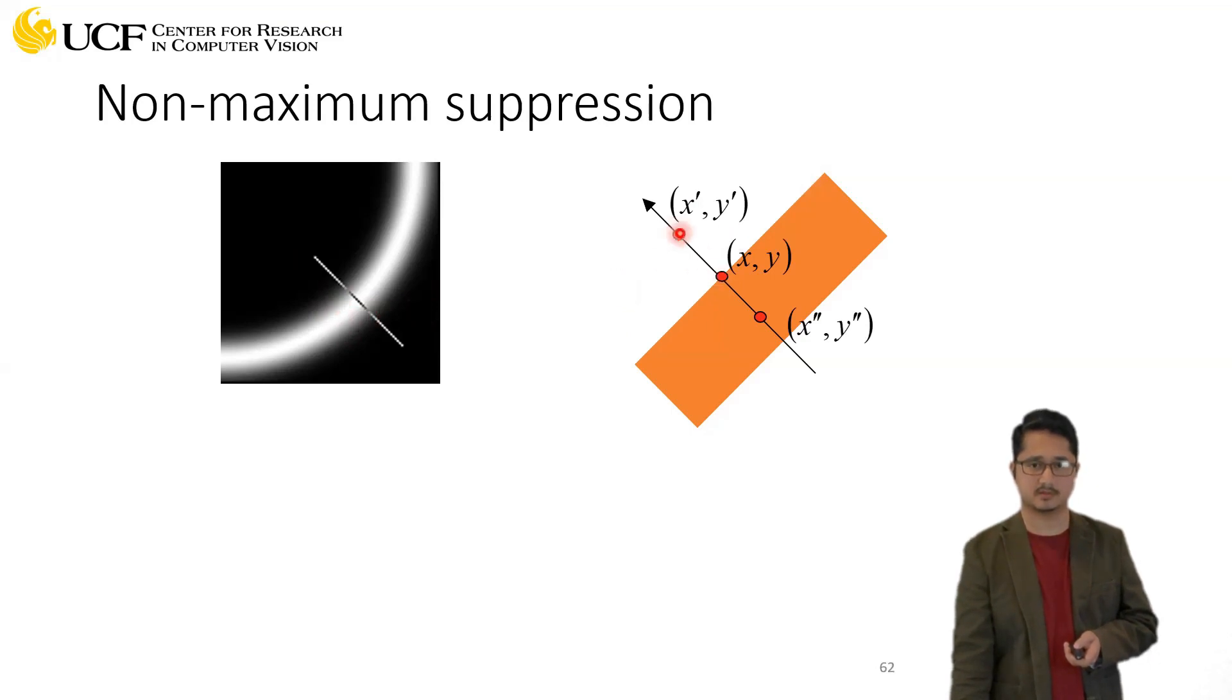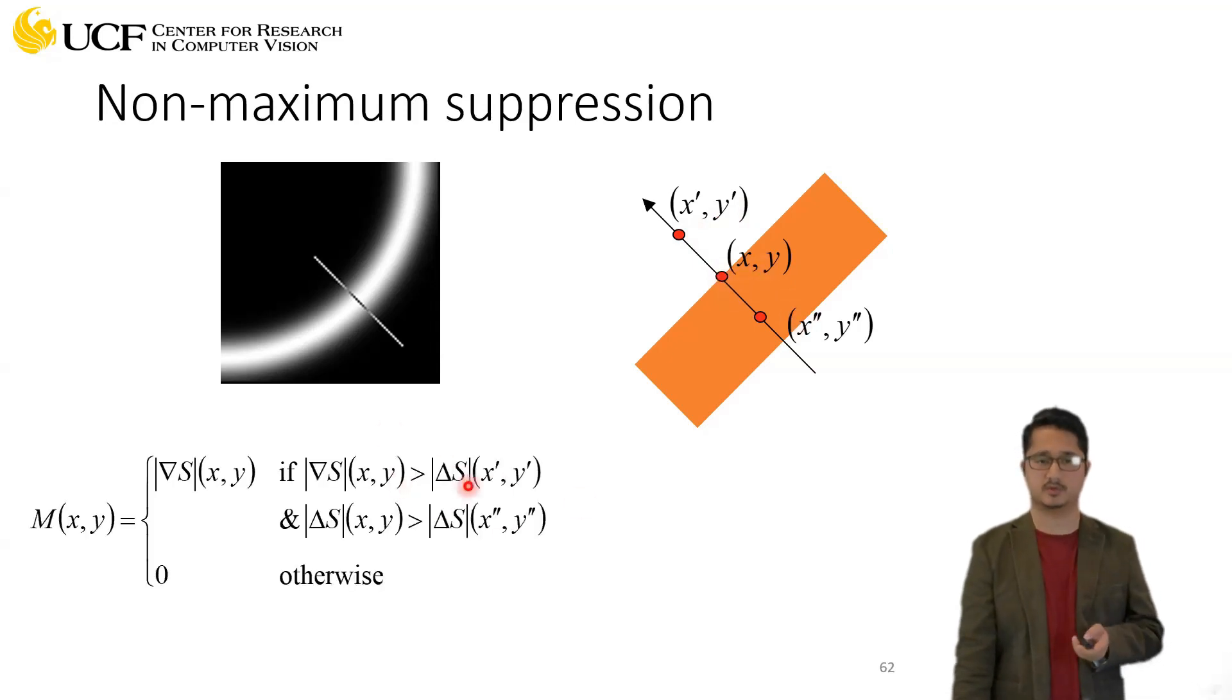And in this case, if these three are pixel values - x', y', x, y, and x'', y'' - at this location what you will do is call this an edge only if the magnitude of your first order derivative is greater than x', y' and x'', y''. Otherwise it's not an edge. So that's a very simple rule here.